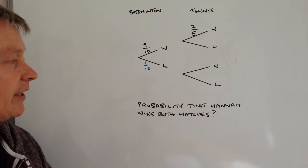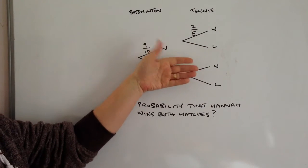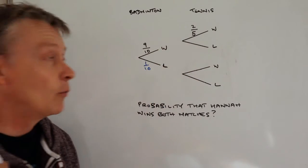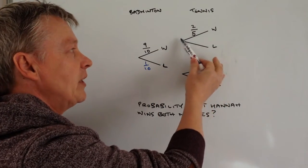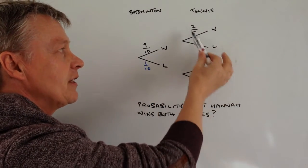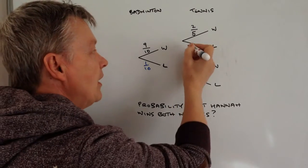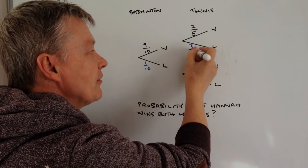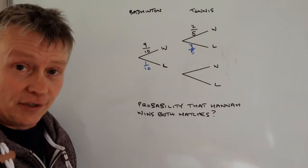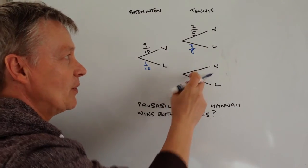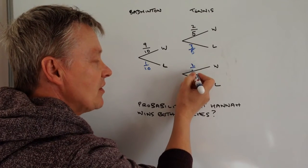Now if you just look at tennis on its own, we've got this tree diagram. Two out of five times she wins, which means that three out of five times she doesn't win. And it's the same with this one, we just simply repeat the exercise.